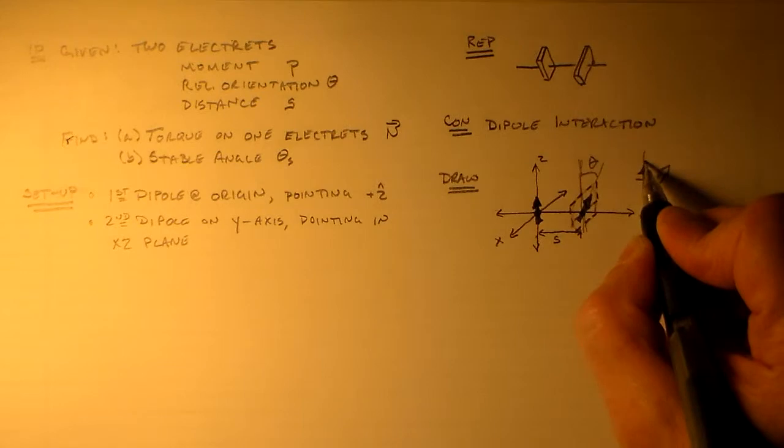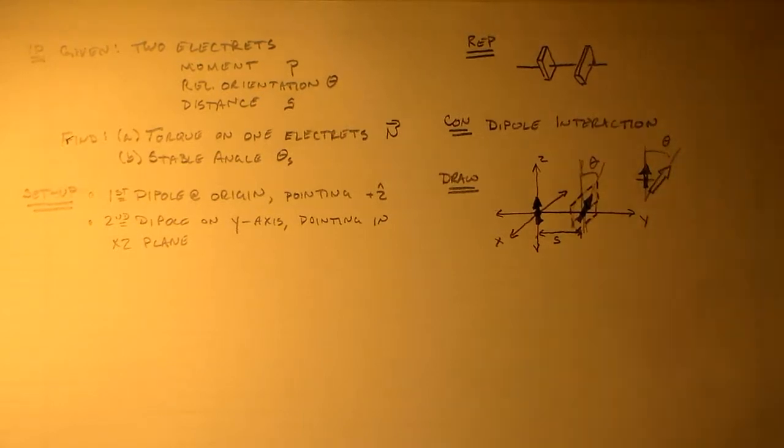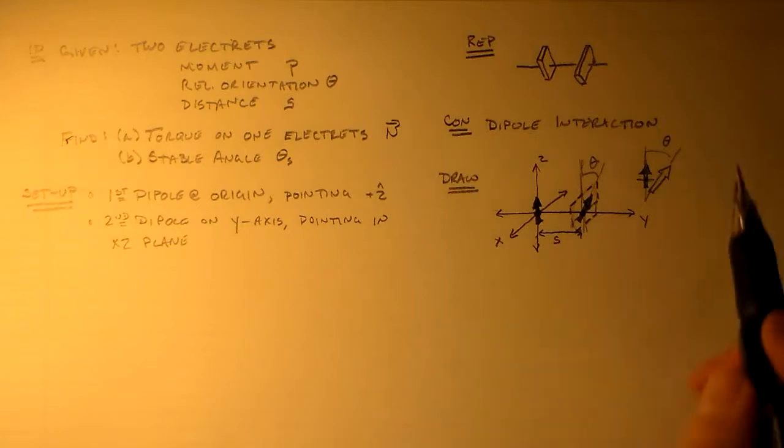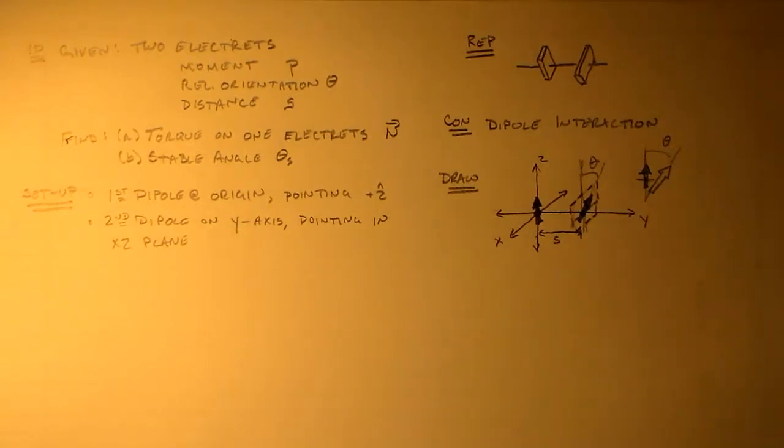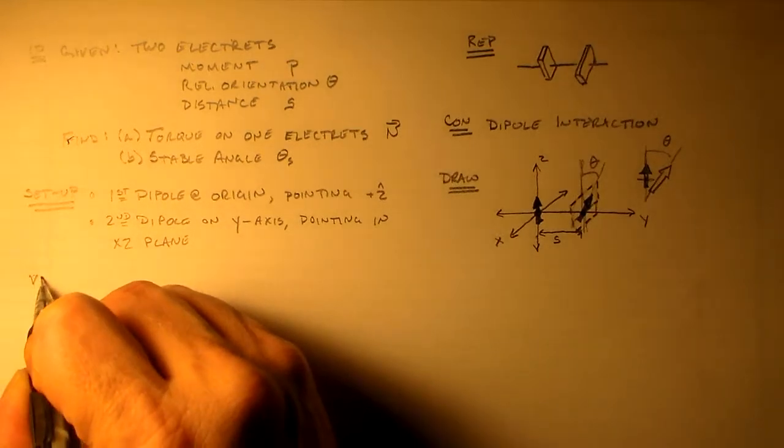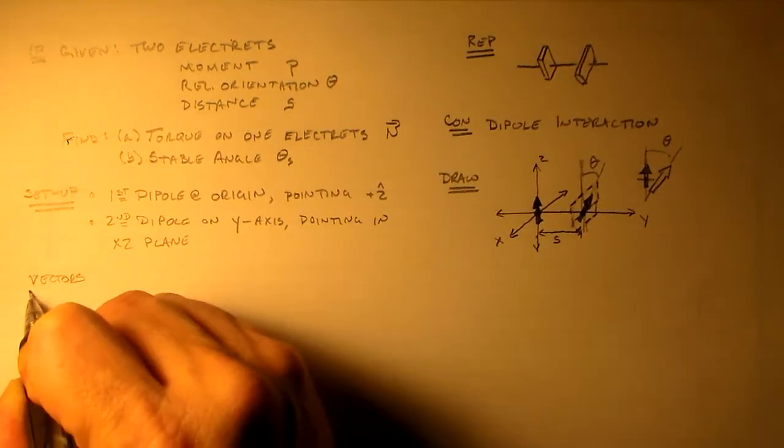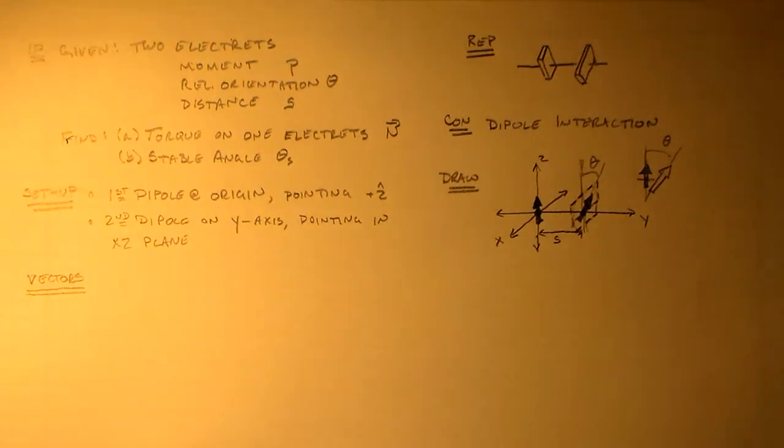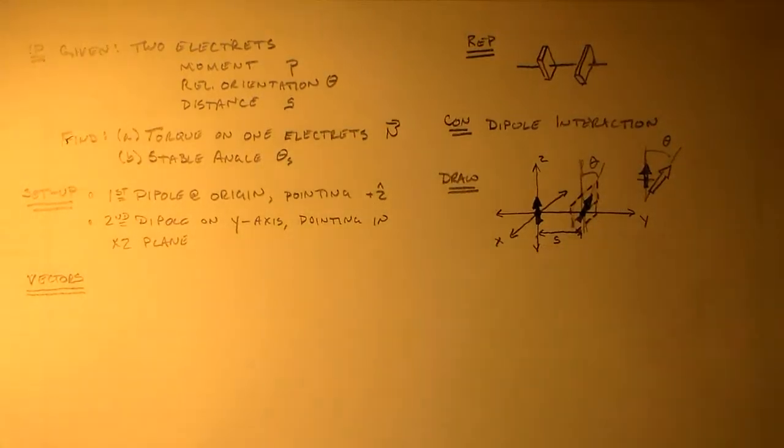So the second dipole on the y axis pointing in the x-z plane. So that's pretty simple there. And then it's hard to see here, but this is what we're going to want to use for our angle theta here. So we've got one pointed in this direction. And if we draw this in three dimensions, the other one is pointed in this direction. And that's our angle theta. That's the thing that we're really investigating, is this angle right here.